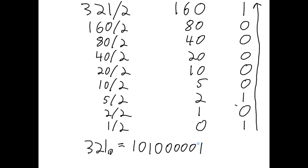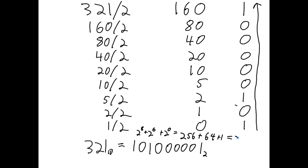Once again I can do a check to make sure I did this conversion correctly, by converting this base 2 number back into base 10. This is the 2 to the 0 column, then 2 to the 6th, and 2 to the 8th. So this equals 2 to the 8th plus 2 to the 6th plus 2 to the 0, which is 256 plus 64 plus 1, which equals 321. So yes, the conversion was done correctly.